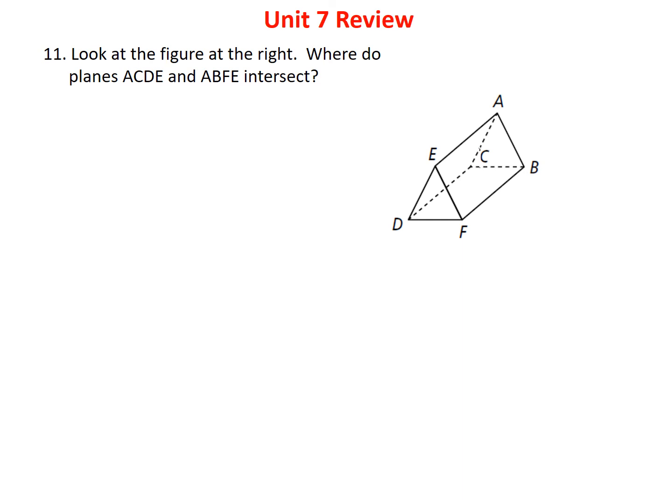Problem 11 asks where planes ACDE and ABFE intersect. Whenever two planes intersect, they always intersect at a line — just like two lines intersect at a point. Plane ACDE is the left side of the triangular prism (colored blue) and ABFE is the right side. Where they cross is line AE, and that's the answer. Hope this helps you do well on the upcoming test — have a great evening.